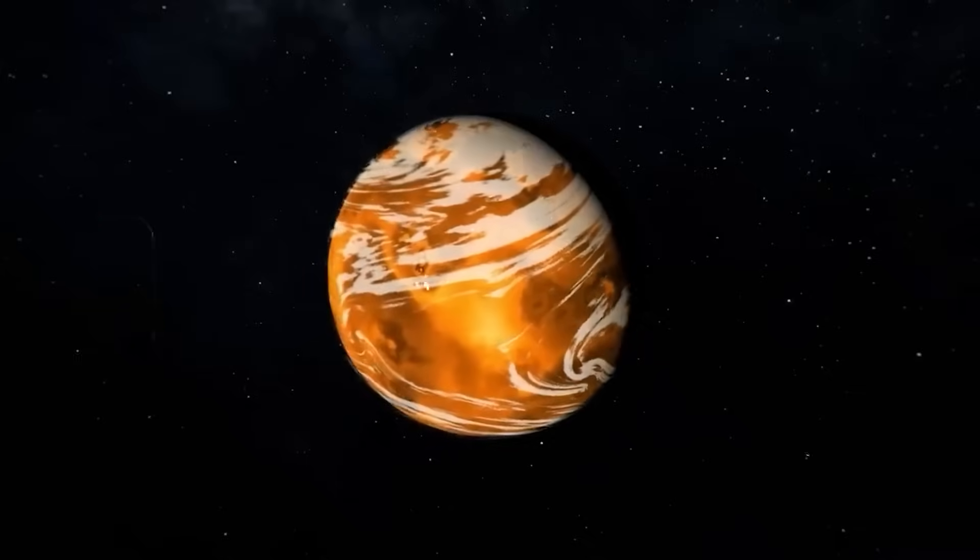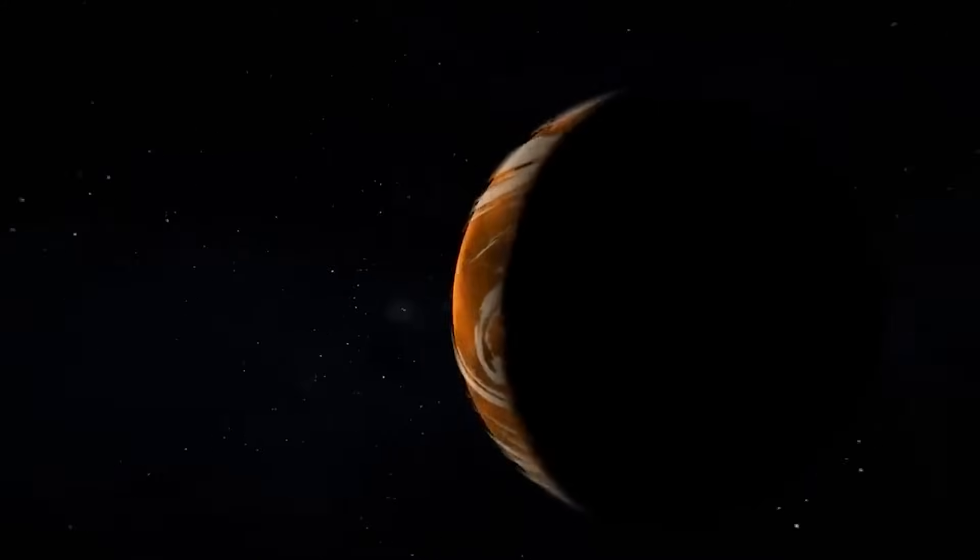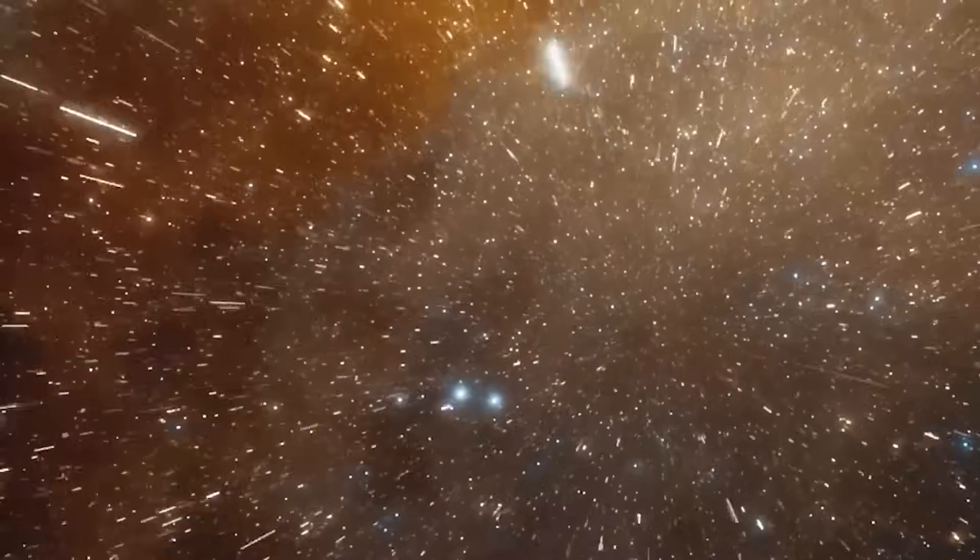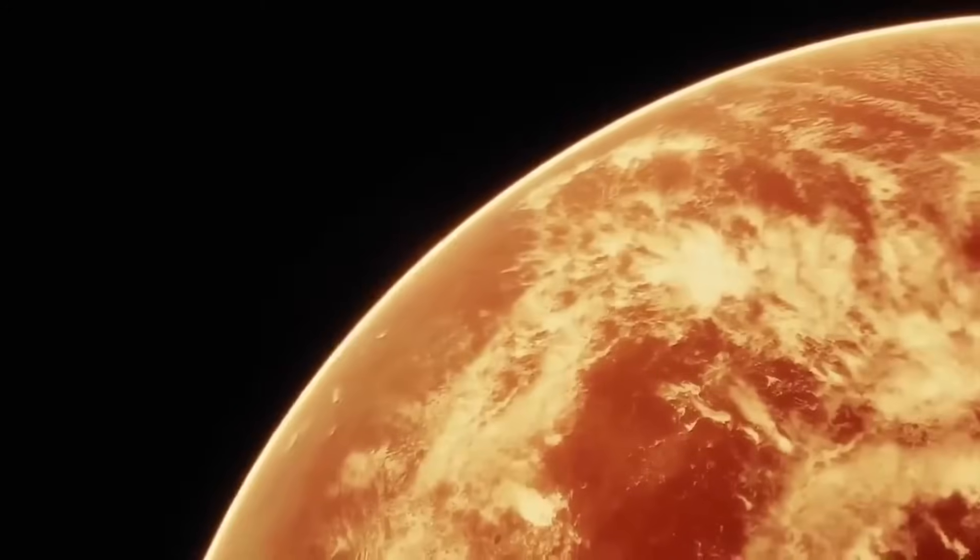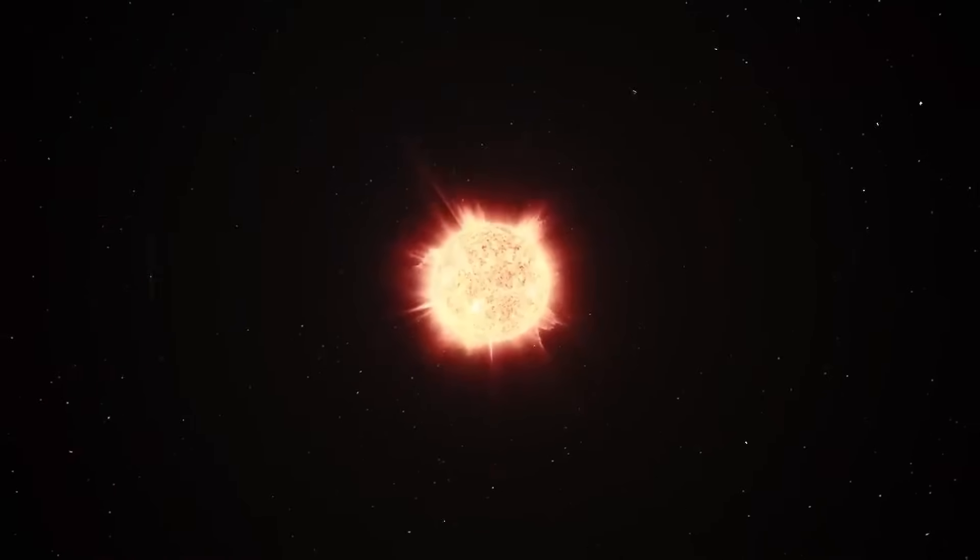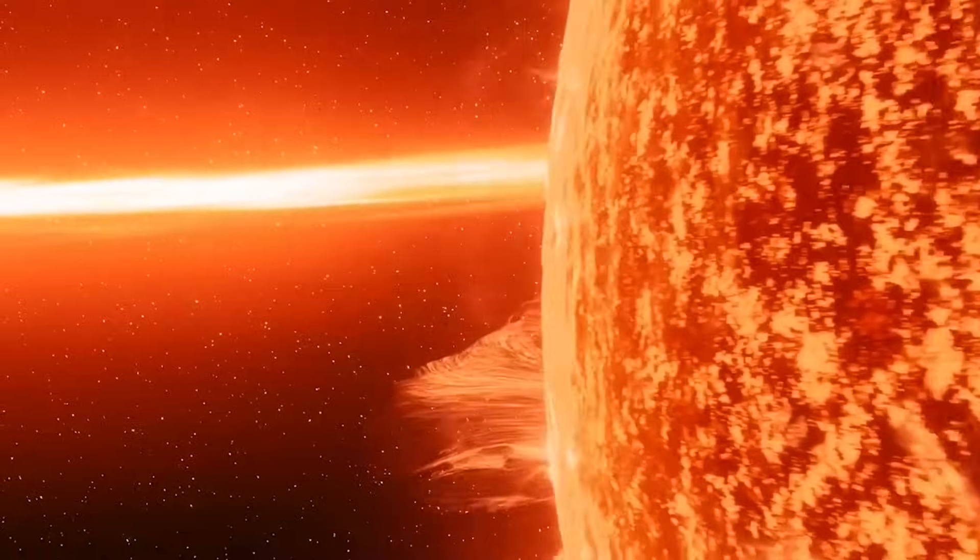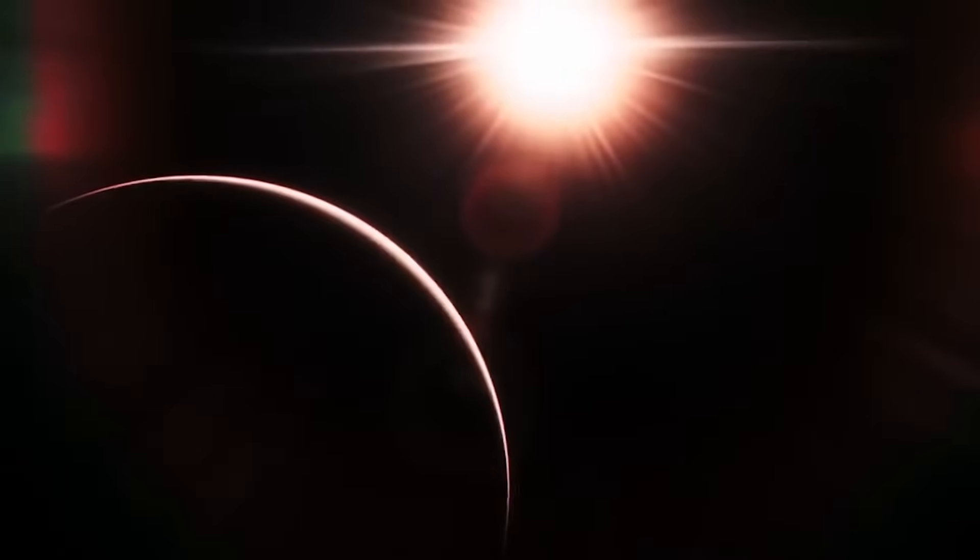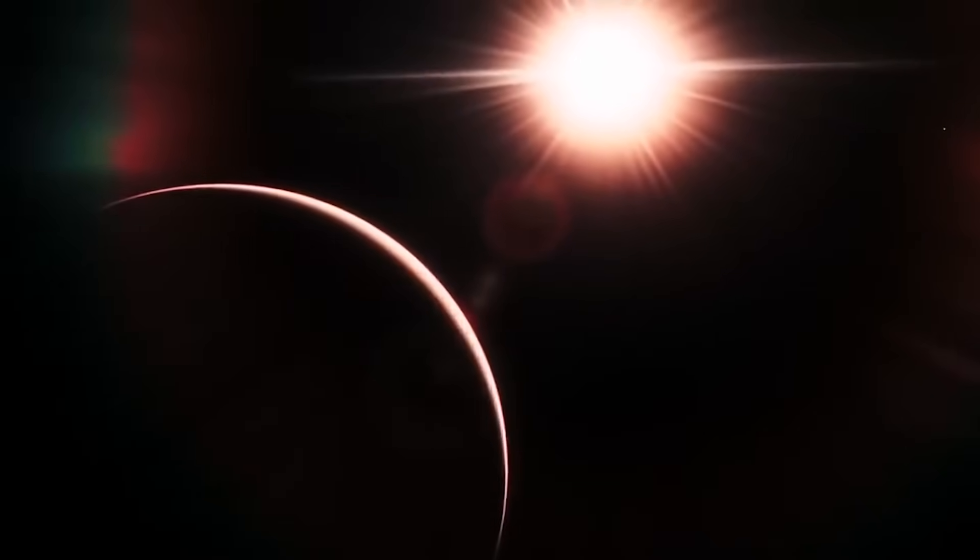But LHS-475b isn't the only close neighbor raising eyebrows. Proxima Centauri b, at a mere 4.2 light-years, is an even stronger candidate. Orbiting within the habitable zone of its red dwarf star, it could have liquid water, one of the key ingredients for life as we know it. This proximity makes Proxima Centauri b a high-priority target for future exploration.